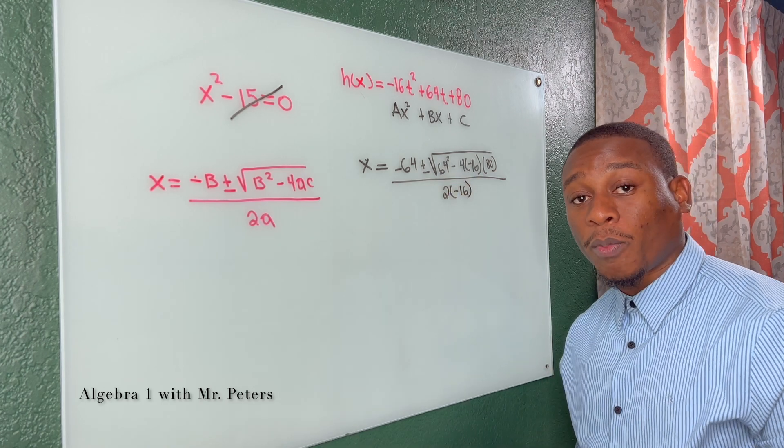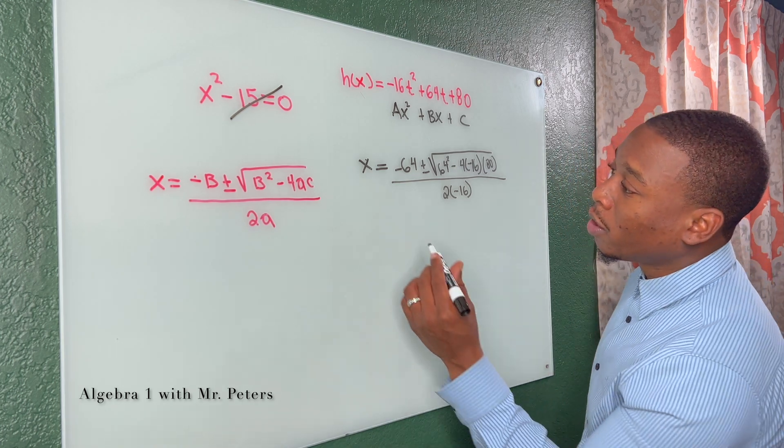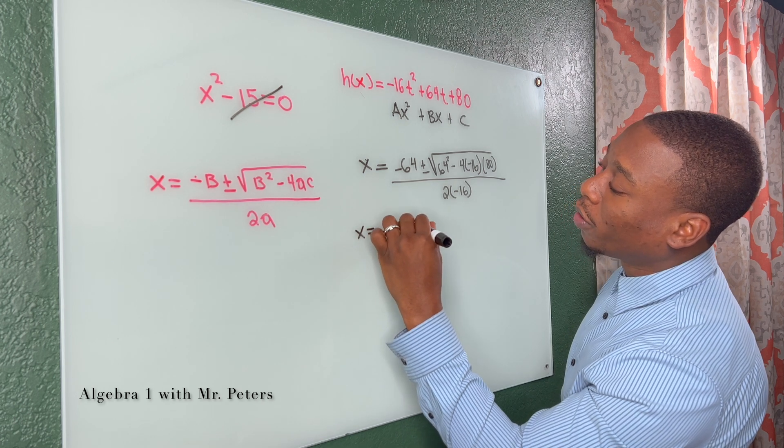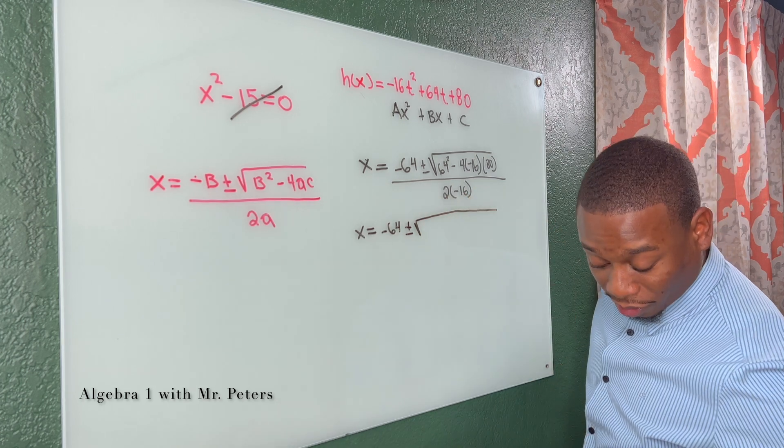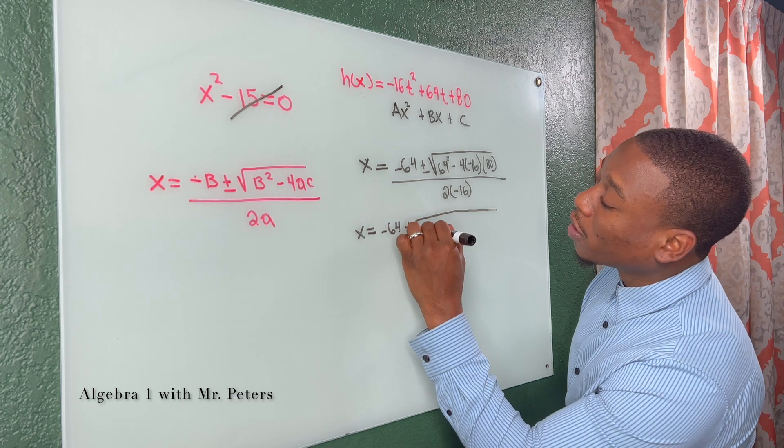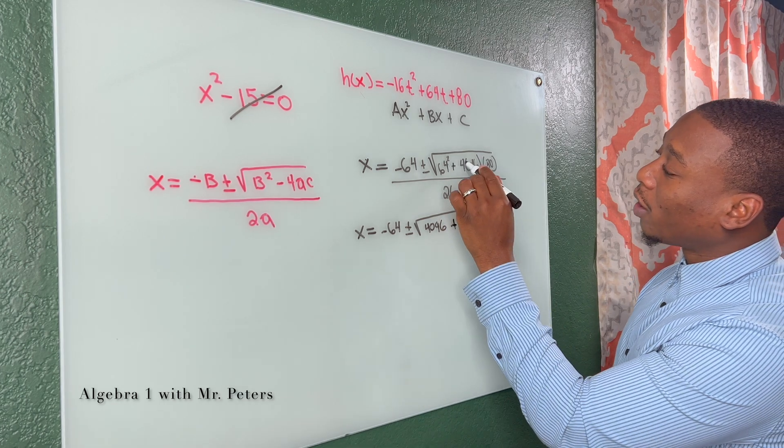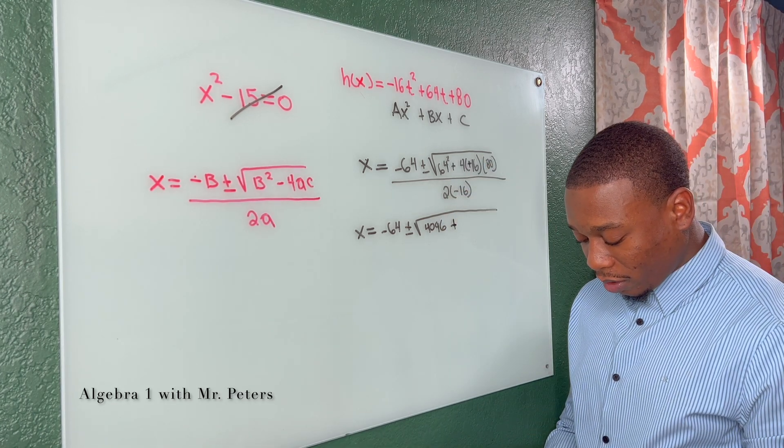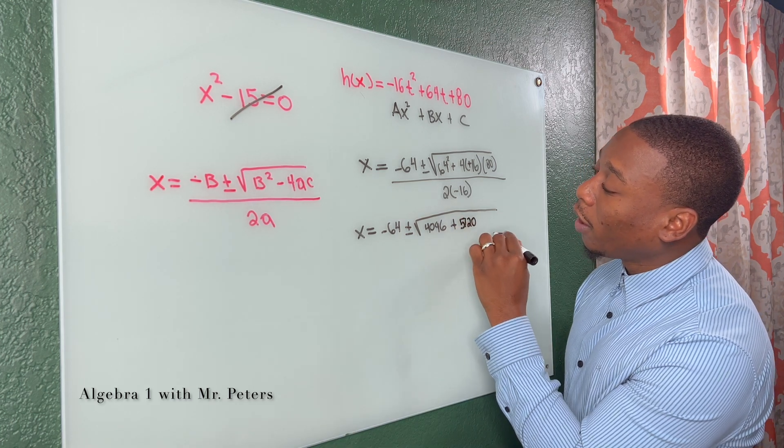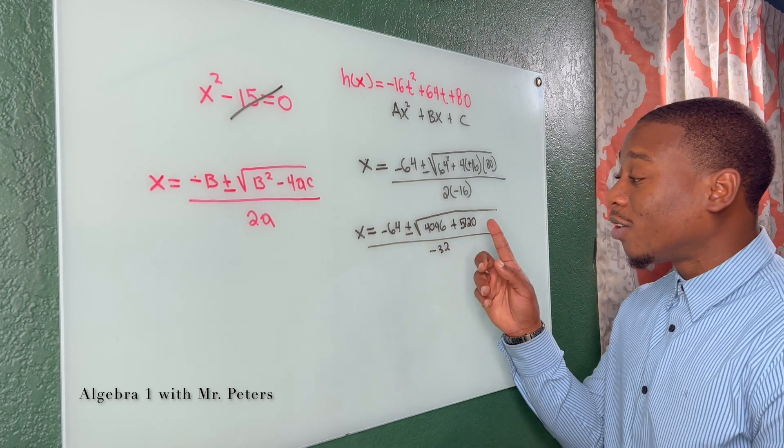Now, typically with these type of problems, you are going to use a calculator and you have to be good with simplifying square roots radicals. So now we go through x is equal to negative 64 plus or minus, and I'm going to use my calculator here, just so we're accurate. So 64 squared is 4,096. And we're going to add that because we have two negatives to 4 times 16 times 80, which is equal to 5,120. And this is all over negative 32. Now, luckily for us in this problem, this is going to turn out to be a perfect square.